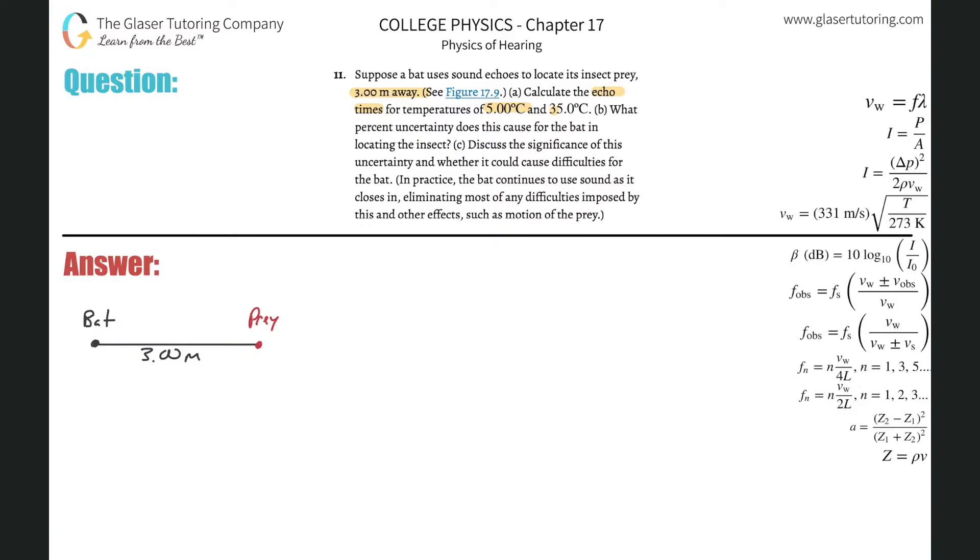Alright, so basically we know that the speed of a sound wave will be affected by temperature via this formula. The velocity of the sound wave will be equal to 331 multiplied by the measured temperature in Kelvin divided by 273. So depending upon the temperature, the velocity of the sound wave will change. So we have two temperatures: 5 degrees Celsius and 35 degrees Celsius.